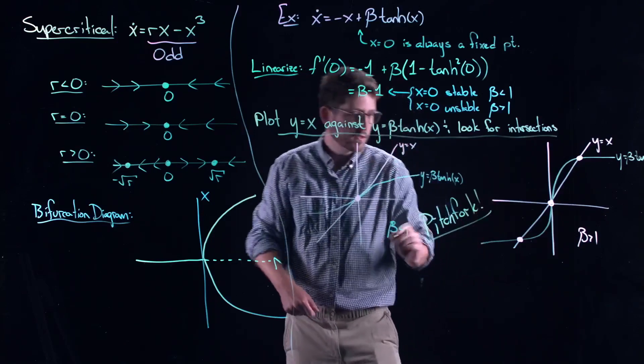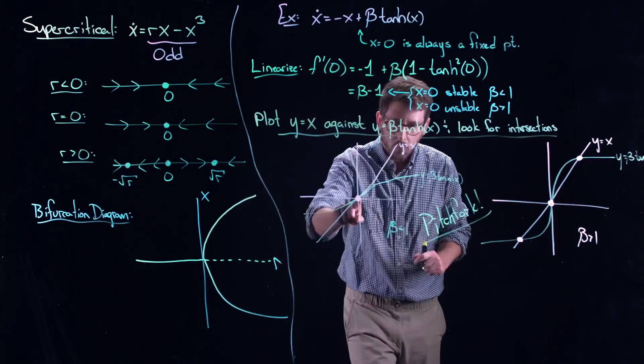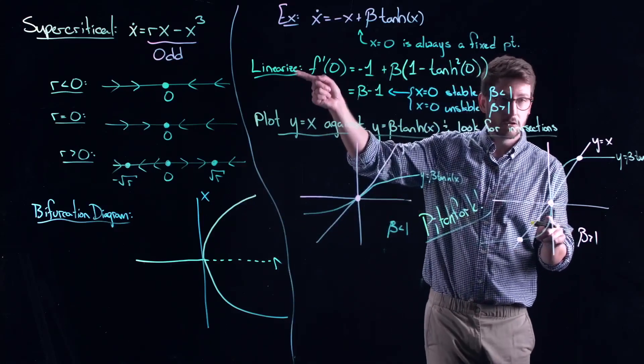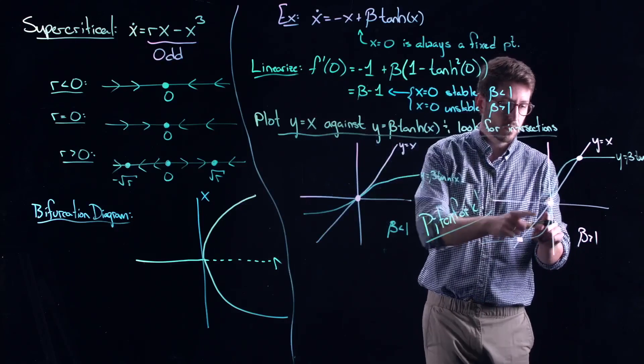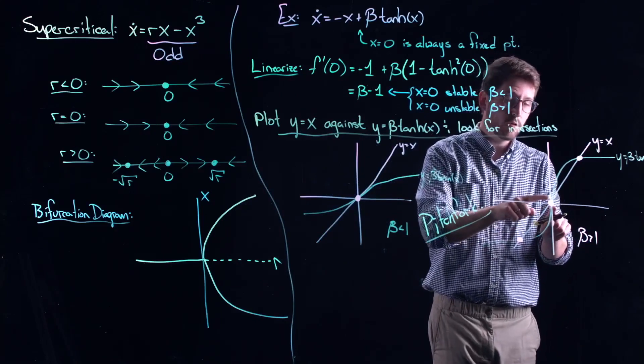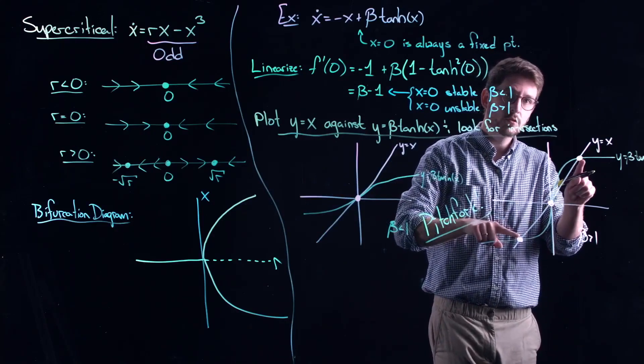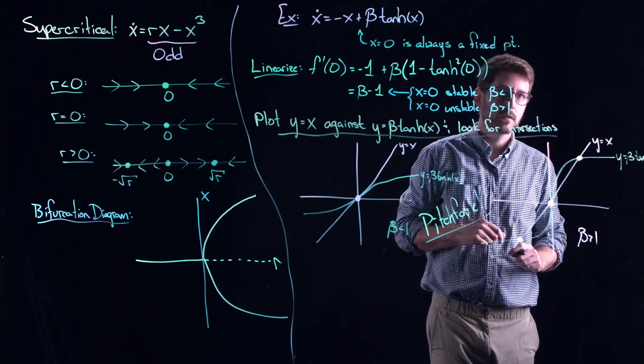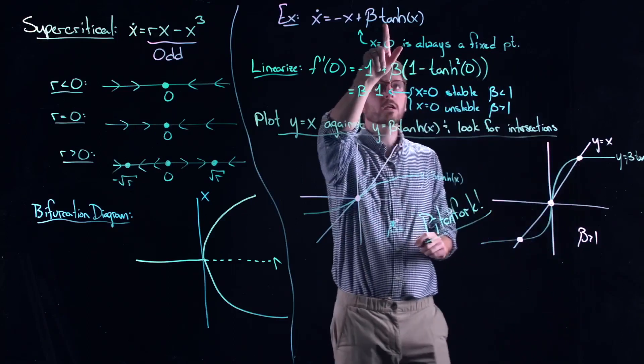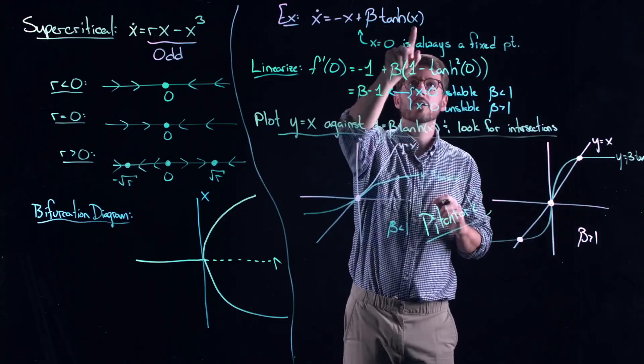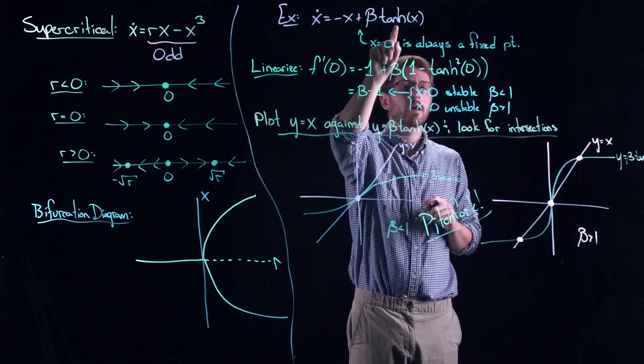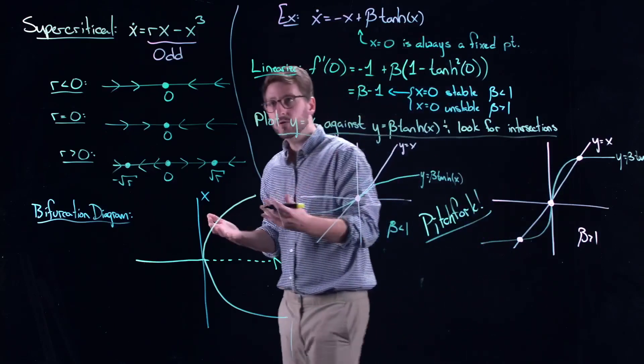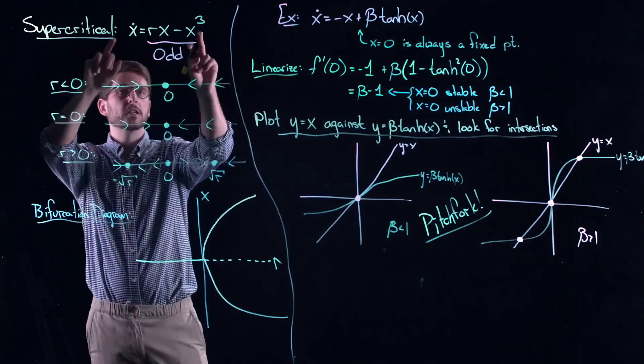Pitchfork bifurcation taking place in the system. One stable fixed point undergoes a supercritical pitchfork bifurcation which gives way to its own instability and leads to two symmetrically related fixed points. The reason I knew that I was going to have a pitchfork in here and not necessarily a transcritical is because this is an odd equation. Hyperbolic tangent is an odd function. And so, again, symmetry breeds pitchforks.